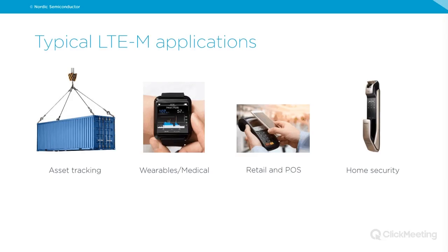Typical LTE-M applications include asset tracking — containers, trailers, packets, pallets, luggage, or pets — often combined with GPS. Wearables such as smartwatches and GPS watches, where you send quite a lot of data, are also well-suited. Retail and point-of-sale applications require short latency and security, including vending machines and shop terminals. Home security applications like door locks, alarms, and smoke detectors also benefit from LTE-M's low latency.